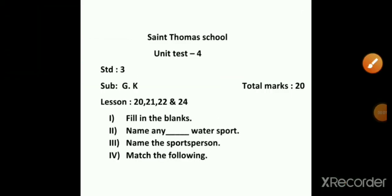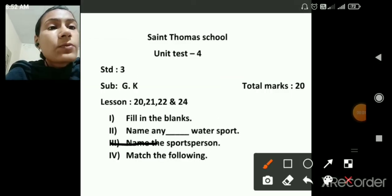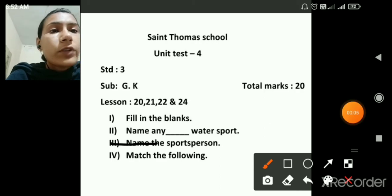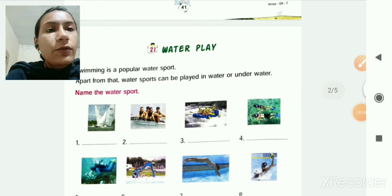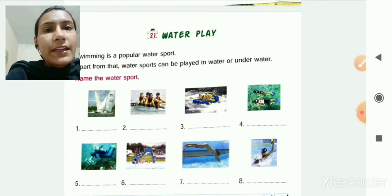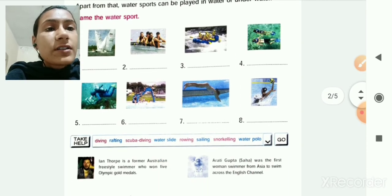Then next roman is name any water sport from lesson number 21. So you can see here lesson number 21, water play. So name, for example, name any five water sport. So you have to write five names of water sport.